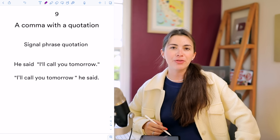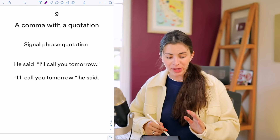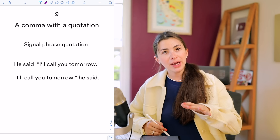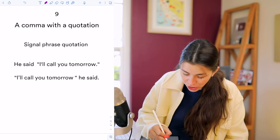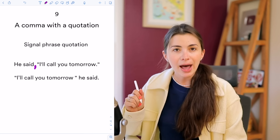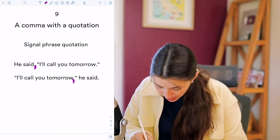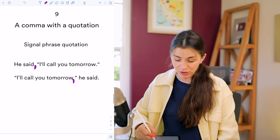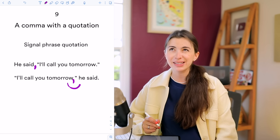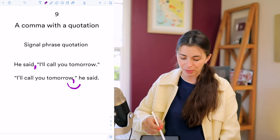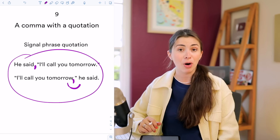The next rule: commas with quotations. When you quote someone, you put a comma before the quotation. Example: 'He said, "I'll call you tomorrow."' And if the attribution comes after: '"I'll call you tomorrow," he said' — make sure you put a comma before ending the quotation. If you read in English, you've probably seen many examples of how people use commas in quotations.